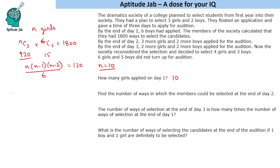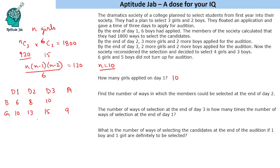We can now build a table. Day 1: 6 boys and 10 girls. End of Day 2: 3 more girls (now 13 girls) and 2 more boys (now 8 boys). Day 3: 2 more girls (now 15 girls) and 2 more boys (now 10 boys). On the day of audition, 6 girls and 5 boys did not turn up, so the number of girls present is 9 and boys present is 5.